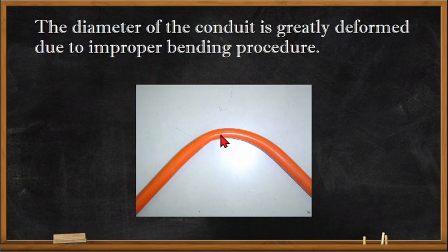What will happen is that conductors, when they pass through this side, will not fit through properly. That's why it is much harder to let the conductor run through this type of bend when the diameter has been greatly deformed. That will be all for this video. Thank you for watching, and as always, enjoy learning.